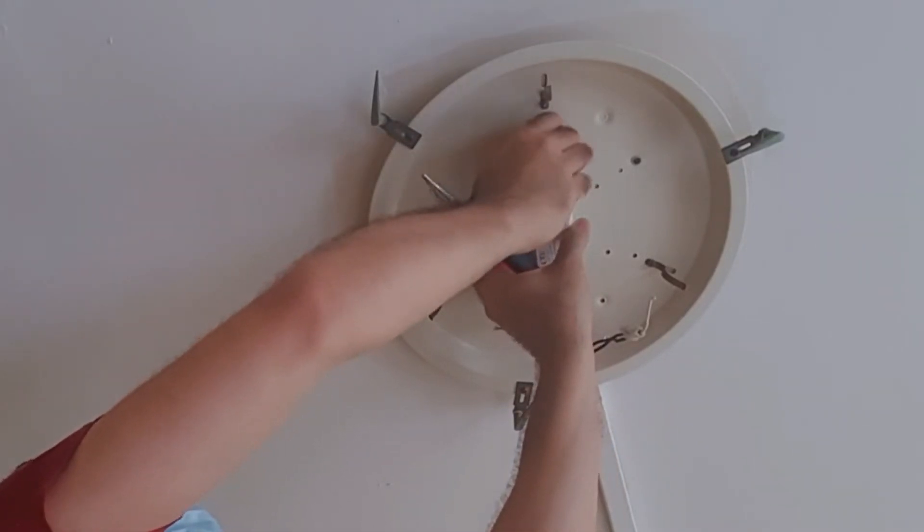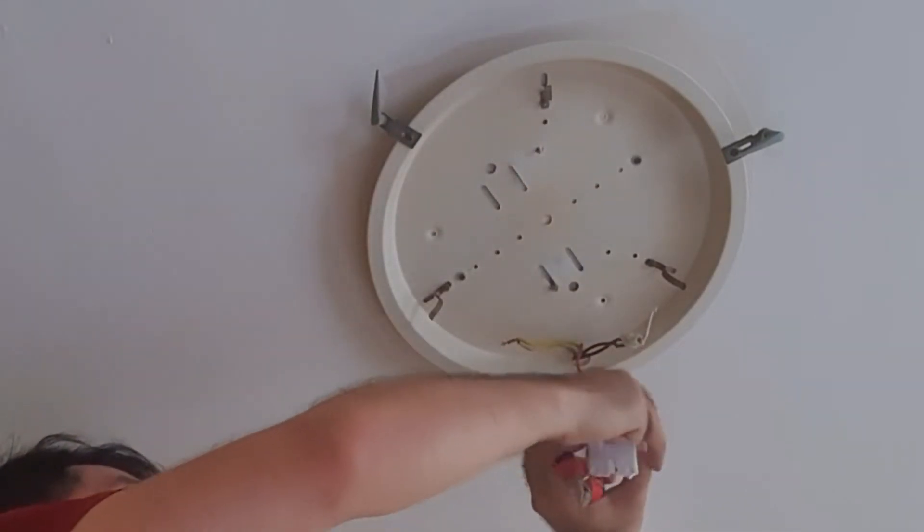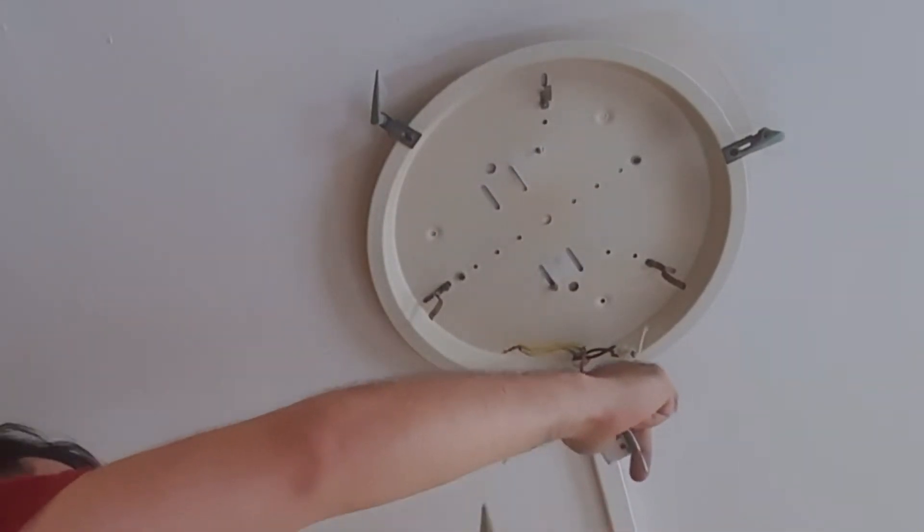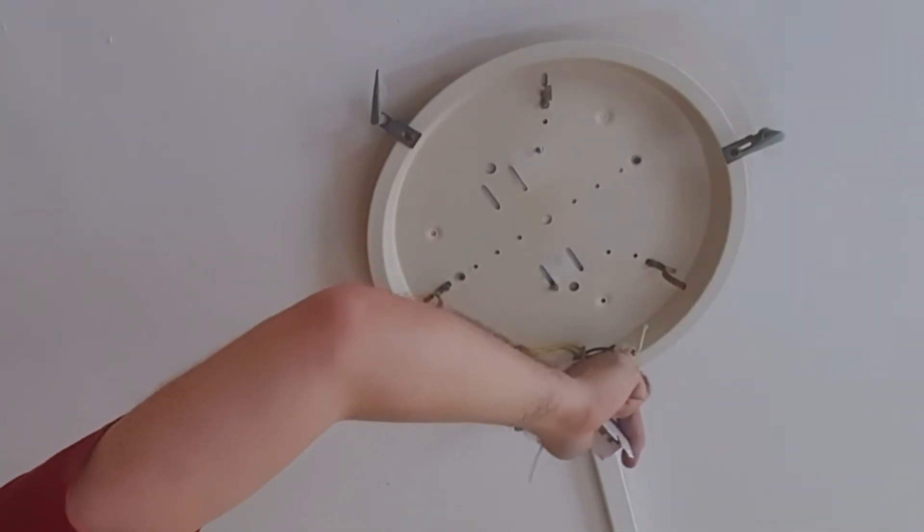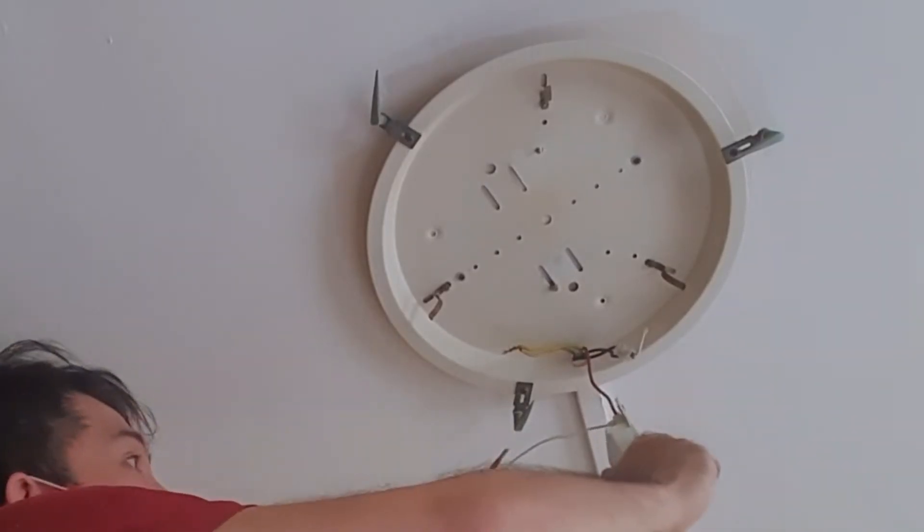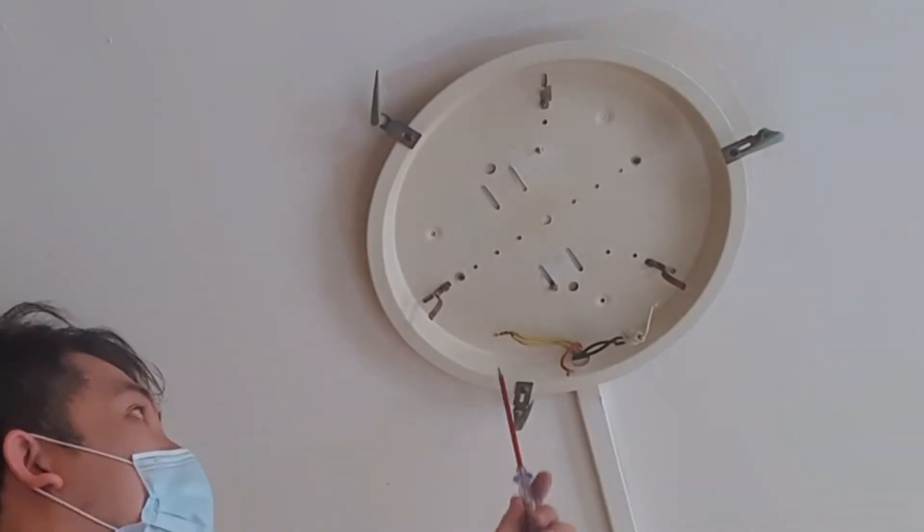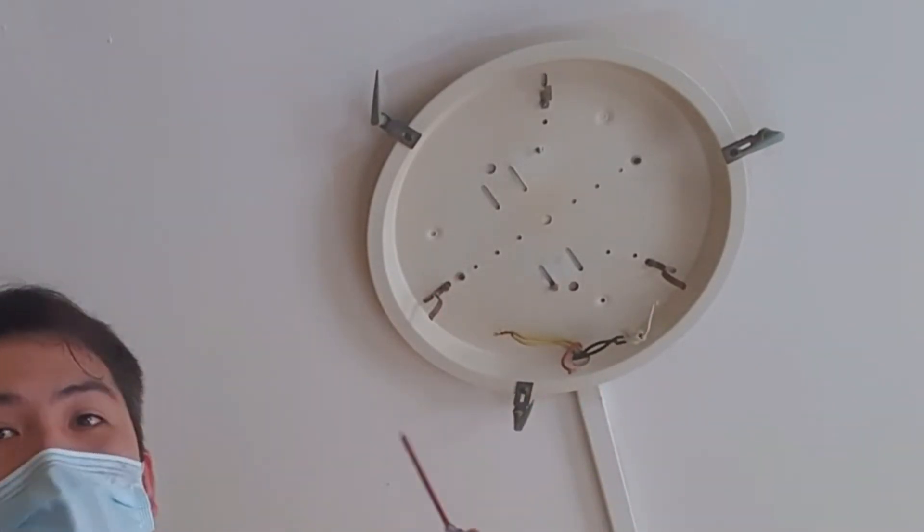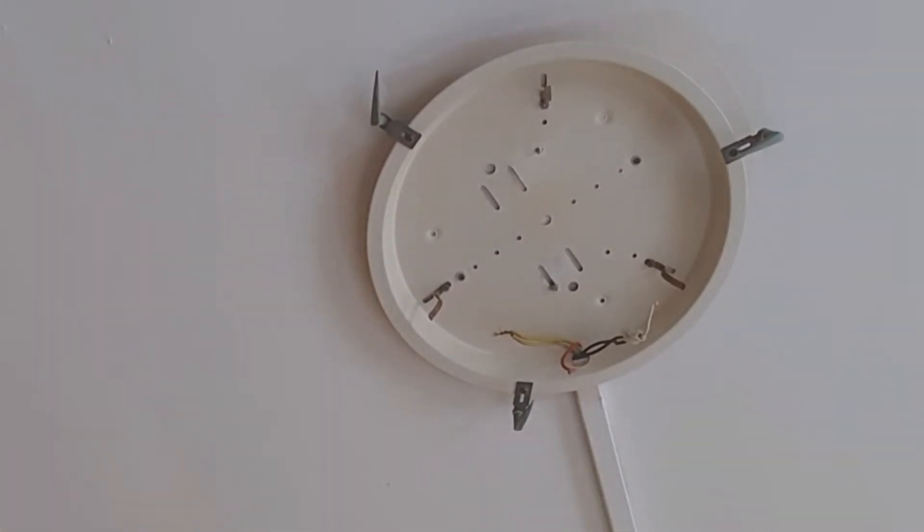It's not. There you go. Okay. And then, I just have this length of wire here. And I'm going to unscrew that using my test pen. Alright. So unscrew that. Okay. Now, you've got ground, live, neutral, and the whole empty base of the light.